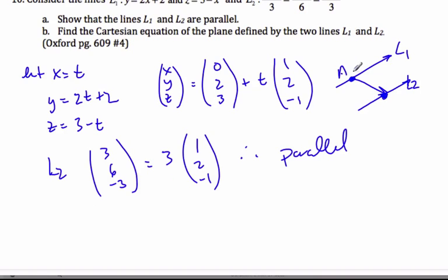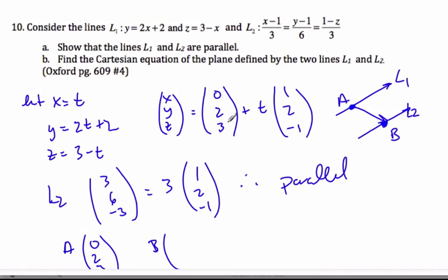So if I call this point A and this point B, A I know point A is 0, 2, 3. B I know is 1, 1, negative 1 from here, 1, 1, and then switch it around, negative 1.